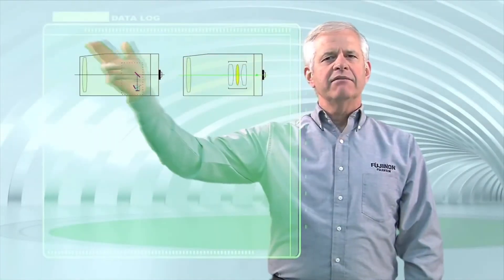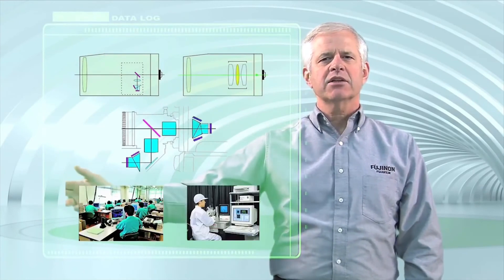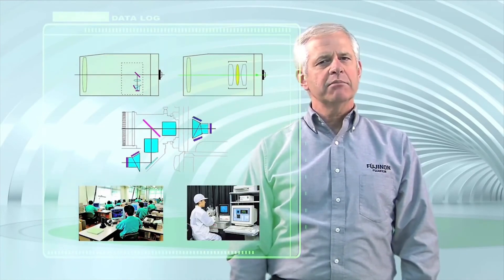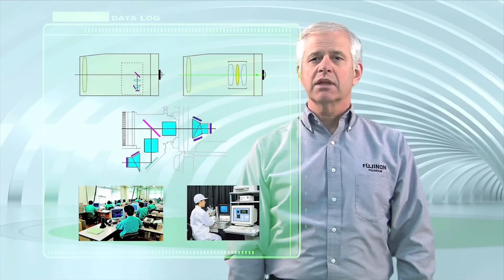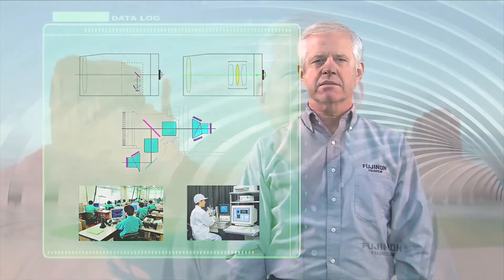In cinematography, lenses are chosen for each scene according to focal length. This makes it extremely important for all lenses to have the same color balance. Advanced design and manufacturing processes are now being employed so lenses exhibit the same transmission characteristics.